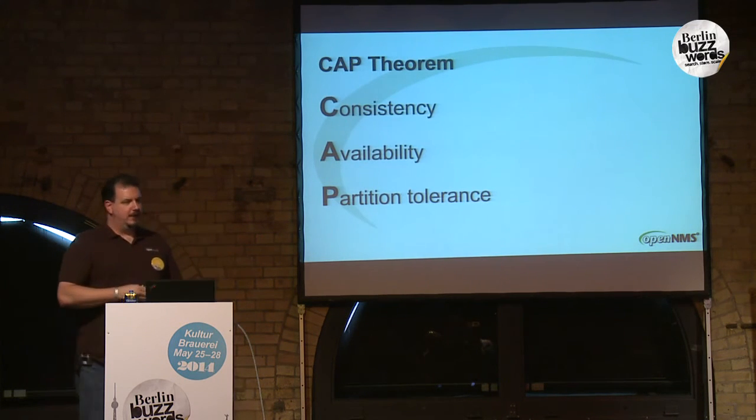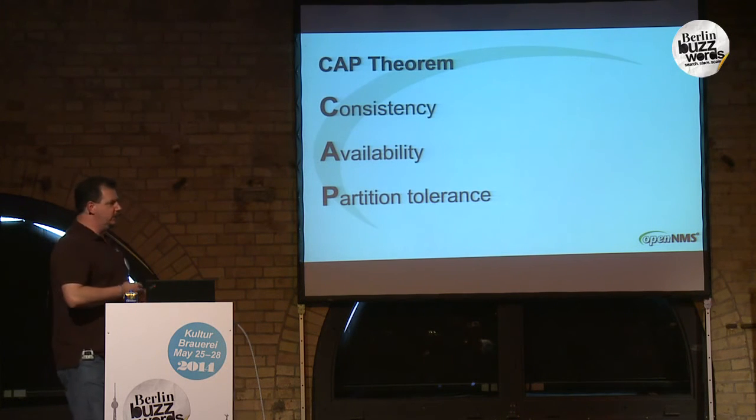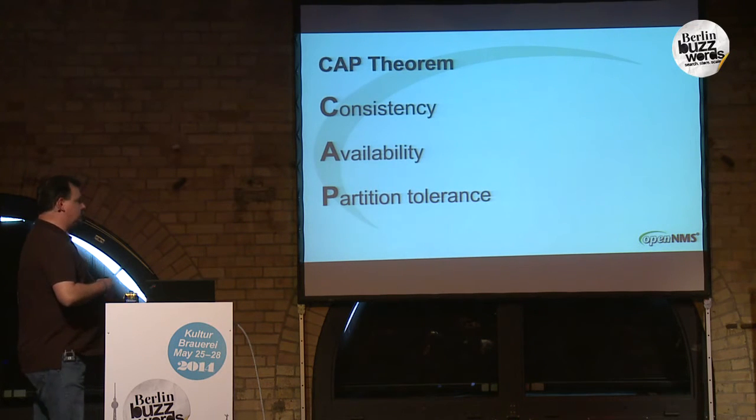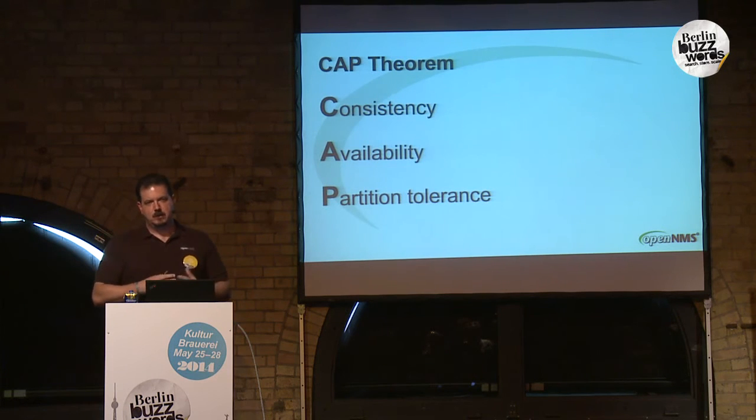Once we have multiple copies of the data, we have to deal with the CAP theorem. These are all desirable properties - consistency, availability, and partition tolerance - but the CAP theorem tells us we can have at most two of these at any given time. If you were to synchronously replicate a value to two hosts - meaning it's successful once written to both - then it follows that the value is consistent. But if one of those nodes is down, you can't do that - you've traded availability in favor of consistency. And likewise, for asynchronous replication, you may get that availability but you lose the consistency.